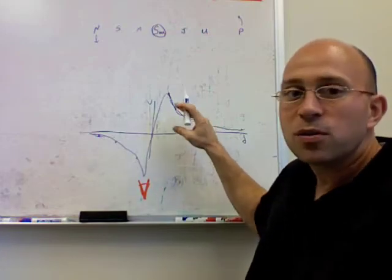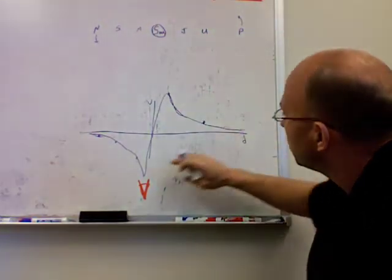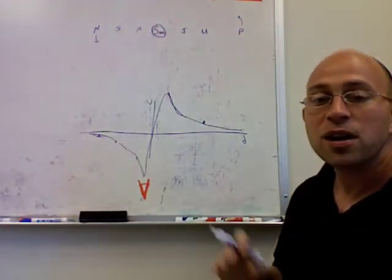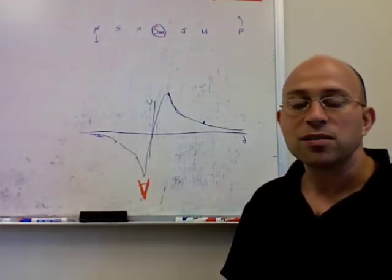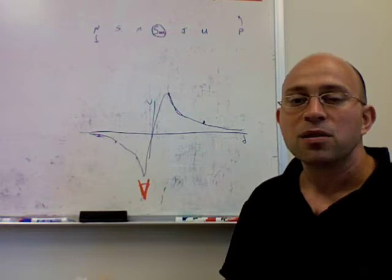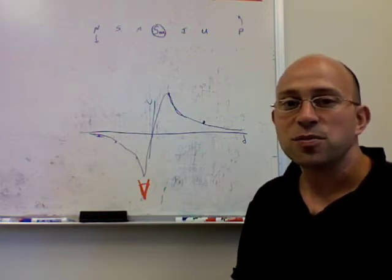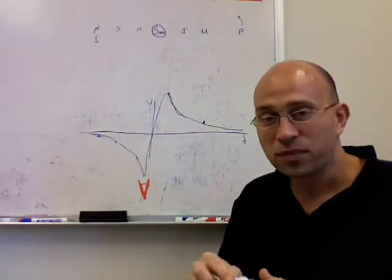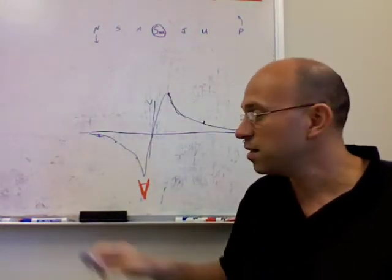And this shows that when you're on a falling rotation curve—these points where the rotation is getting closer to zero as you go farther out—they're all outside the distribution of mass. When you're inside the distribution of mass, the rotation curve is not falling. It's either rising or flat. So that's really important when we get to galaxies.